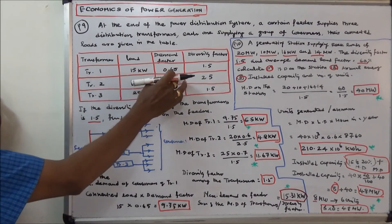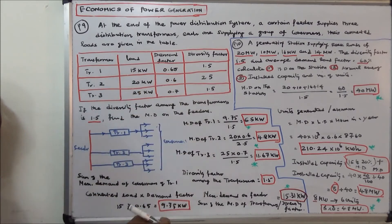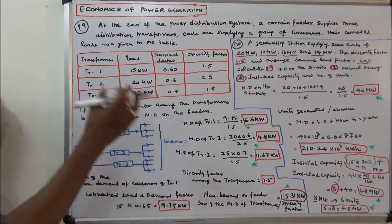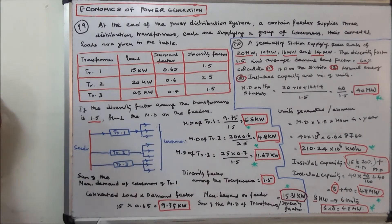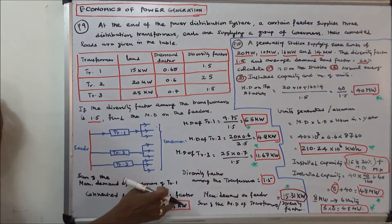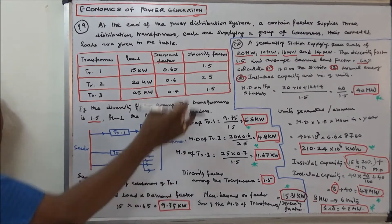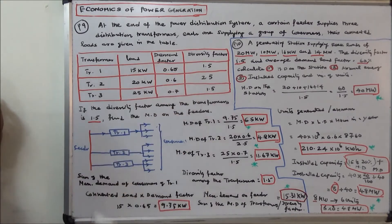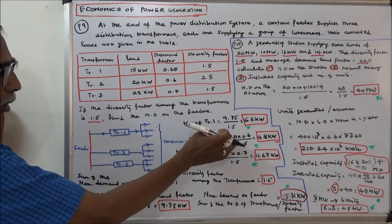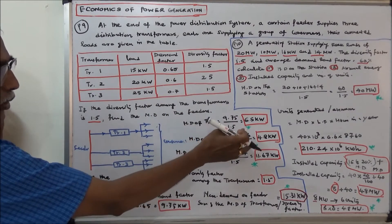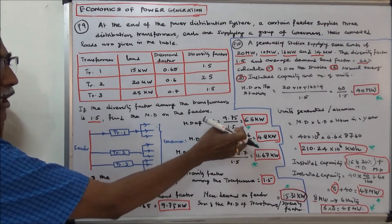That is 15 multiplied by 0.65, which equals 9.75 kilowatts. We then calculate the maximum demand of transformer one, equal to connected load times demand factor divided by diversity factor. So 9.75 divided by 1.5 equals 6.5 kilowatts.